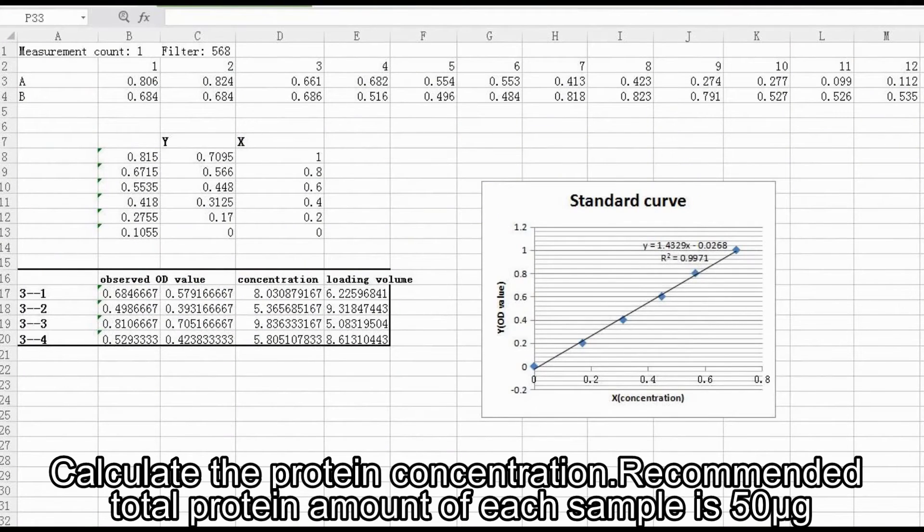Calculate the protein concentration according to the average OD value of samples with the equation. Then calculate the loading volume of samples according to the protein concentration. The recommended total protein amount of each sample is 50 micrograms.